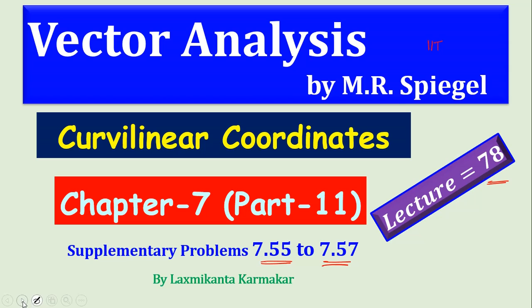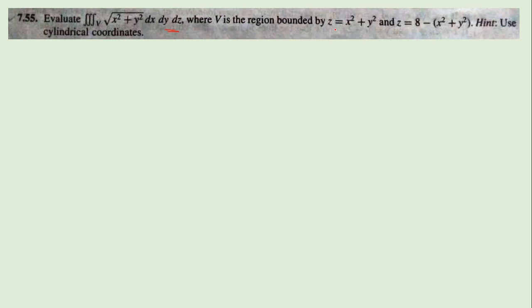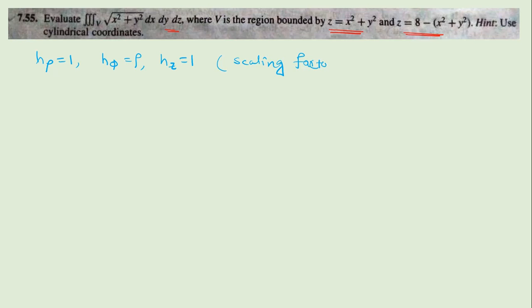Question 7.55 says: evaluate the integration over the region bounded by z equal to x²+y² and z equal to 8-x²-y². The hint given is to use the cylindrical coordinate system. From the previous lecture you know the scaling factors for cylindrical coordinates: h_ρ = 1, h_φ = ρ, h_z = 1. Now if we want to find out the volume integral of x²+y² dx dy dz in the Cartesian coordinate system.